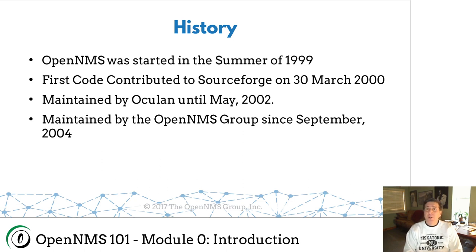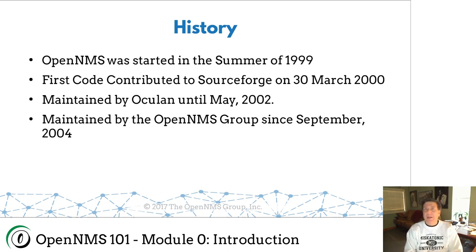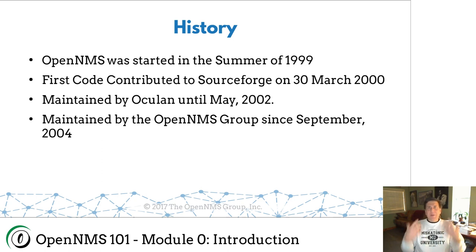In May of 2002, a couple of things happened. First of all, we released OpenNMS 1.0 — we have a 1.0 release, so that was kind of cool. And the second thing was that Oculan — the investors mainly of Oculan — decided that they were no longer interested in publishing anything under the open source model. Now, they own the copyright, and if you own the copyright, you're free to do what you want with the code. Of course, once something is published under an open source license you can't unpublish it, but all future work was going to be proprietary, and they weren't going to release the code to the public.